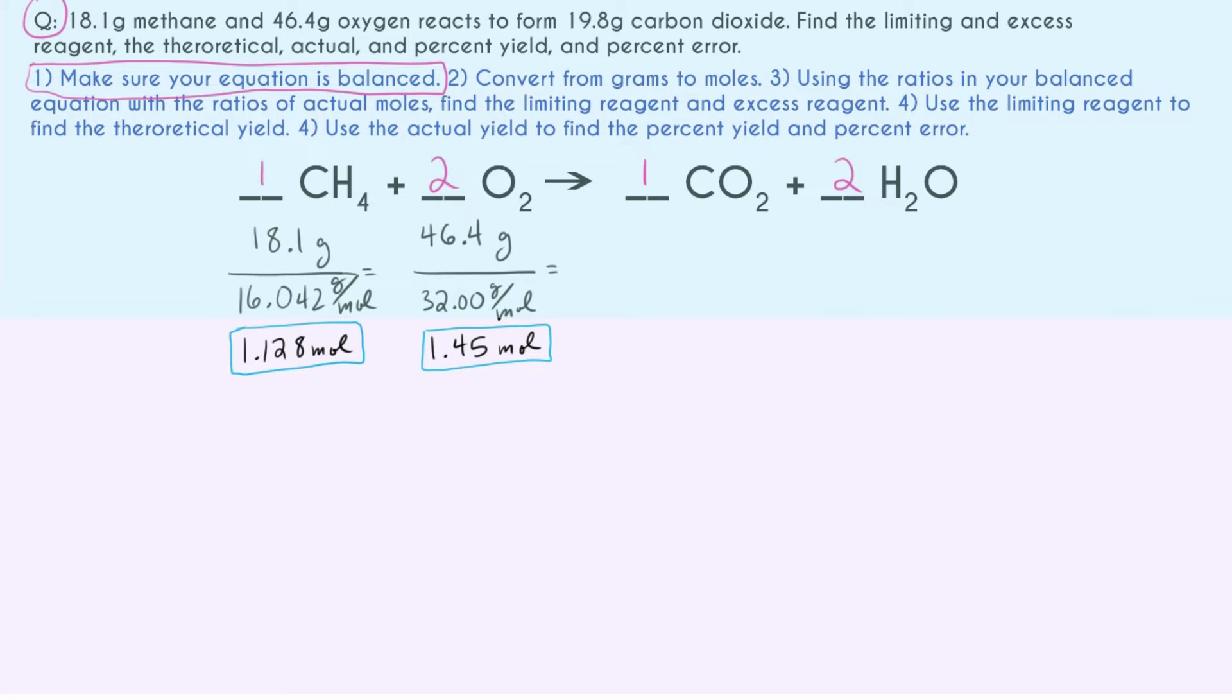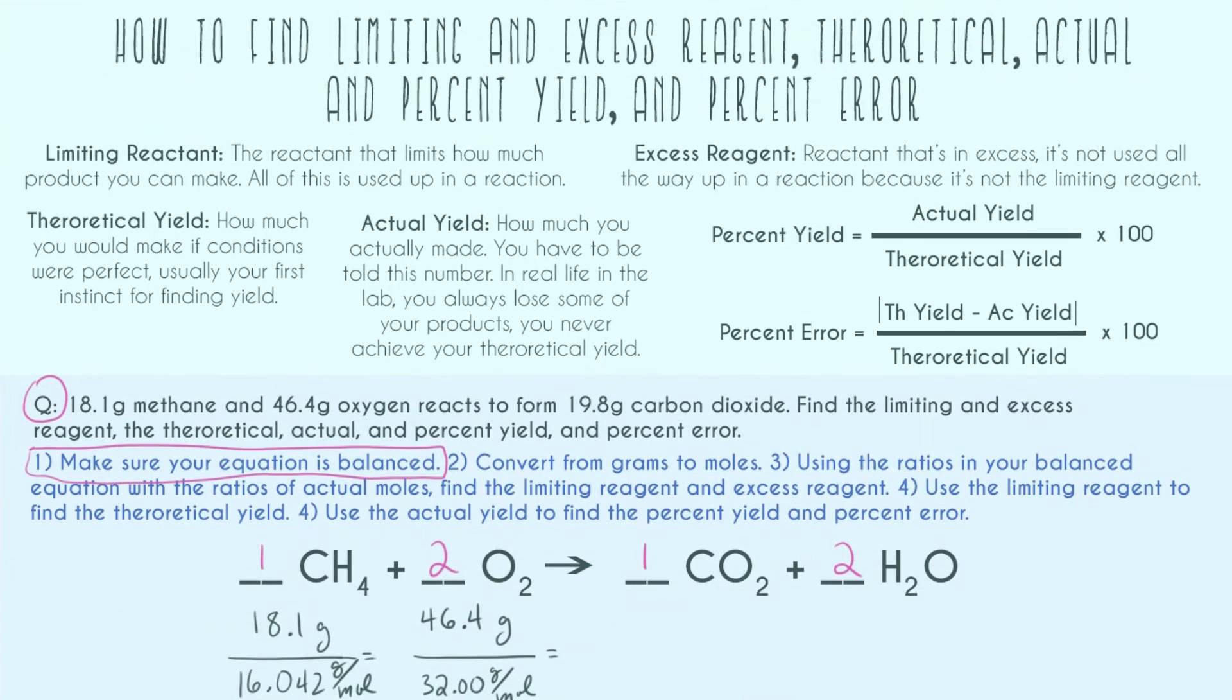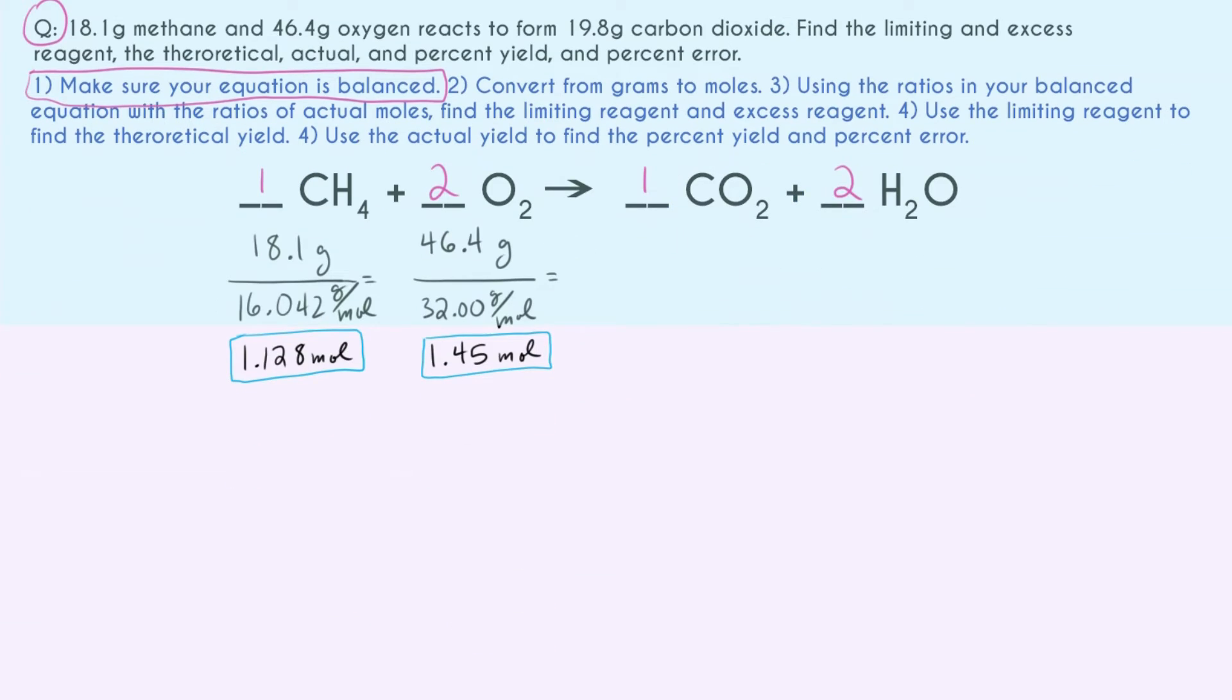All right, so these are our number of moles that we have of methane and oxygen. And now, just to check our definition of both limiting and excess reagent: the limiting reactant or reagent is the reactant that limits how much product you can make. All of this is used up in a reaction. And the excess reagent or reactant is the reactant that's in excess—it's not used all the way up in a reaction because it's not the limiting reagent.